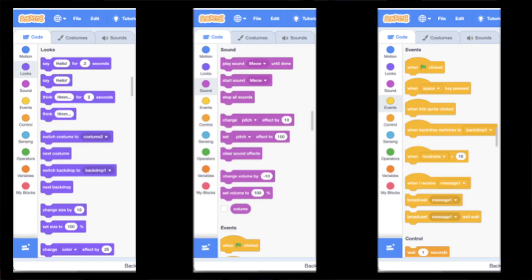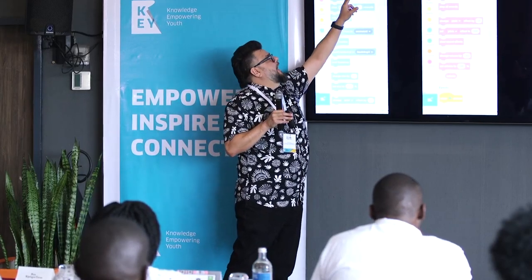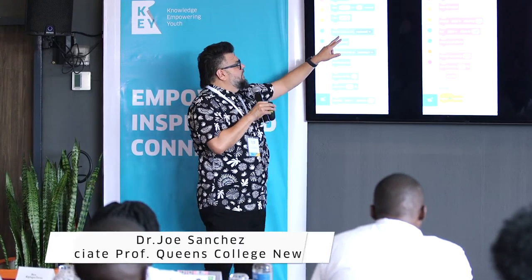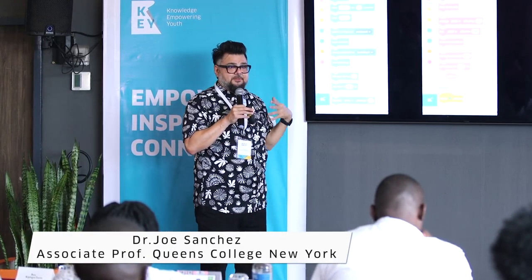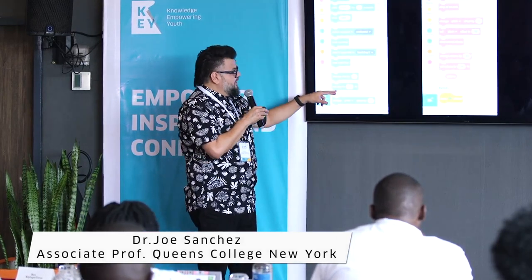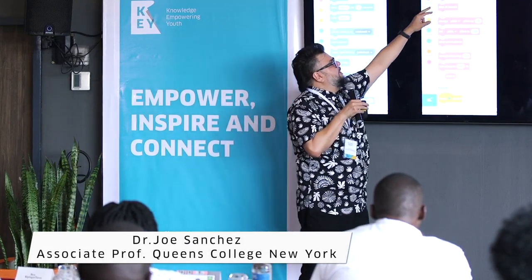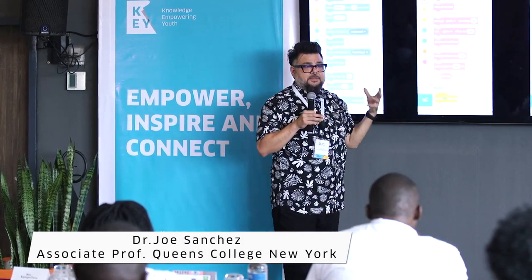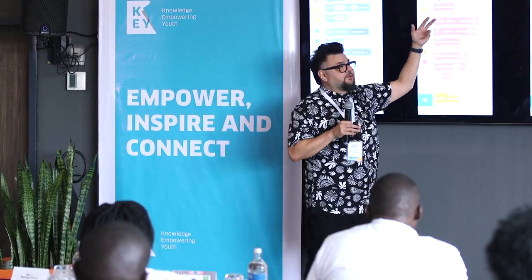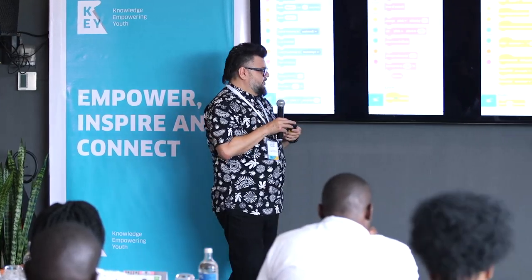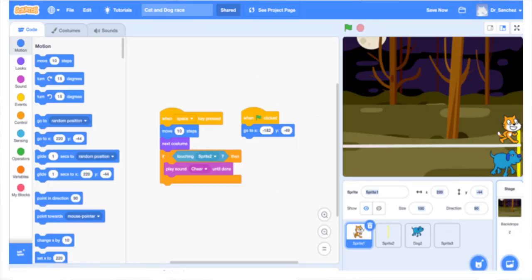Under Looks, you can say 'say hello for 2 seconds' — you can make it say anything, like 'Hi, my name is cat.' You can switch costumes to make characters look like they're walking, and change size. Under Sound, you can play sounds like a cat meow until it's done — there are a hundred different sounds available. Under Events: 'when the green flag is clicked, do something' — in Scratch, you always click the green flag to make something happen.